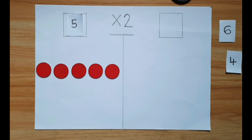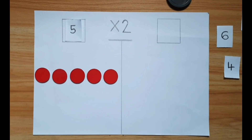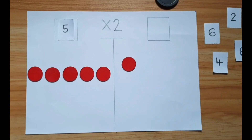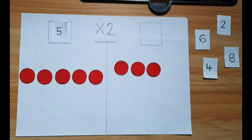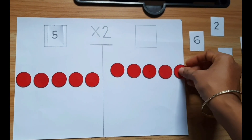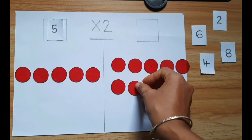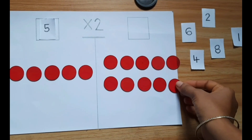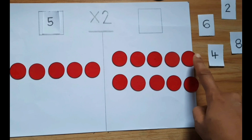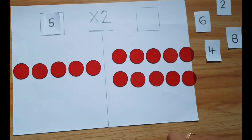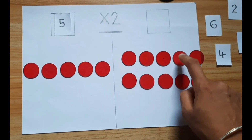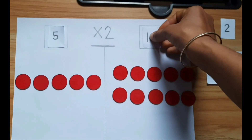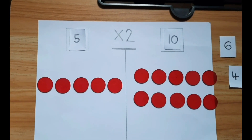What is the doubling of five? Five is two times. So the total count is ten: one, two, three, four, five, six, seven, eight, nine, ten. So five times two is ten.